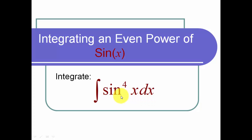The trouble here is that we would like to reserve a sine of x dx, but if we did that, we'd be left with sine cubed of x. The problem is that sine cubed of x cannot nicely be converted into powers of cosine of x.